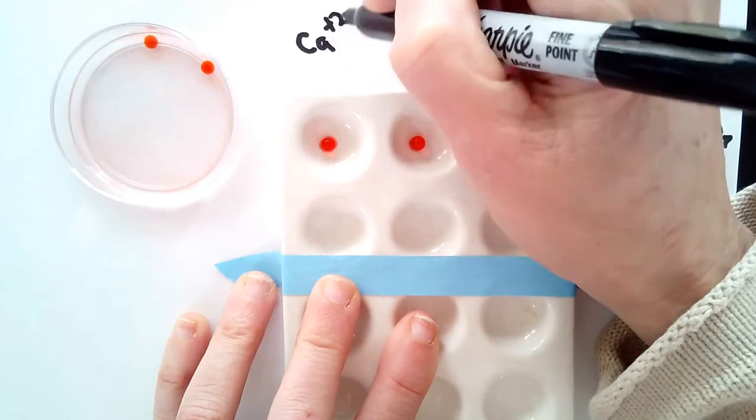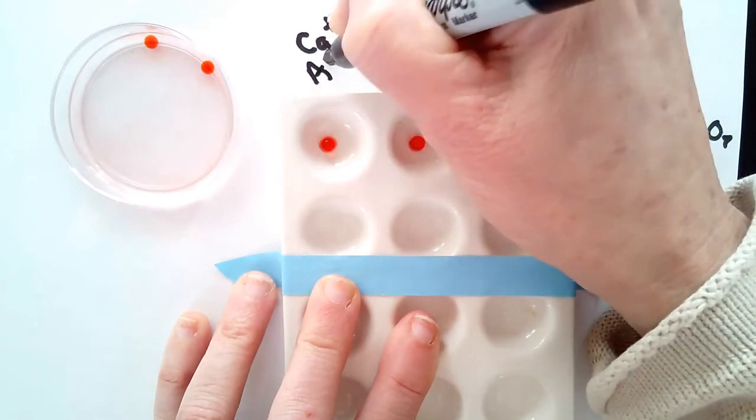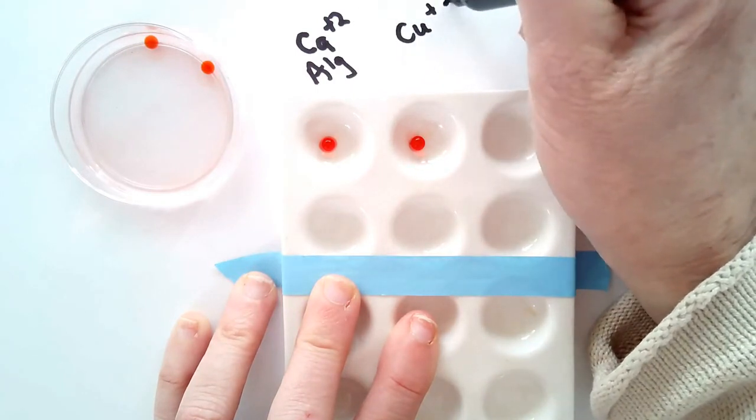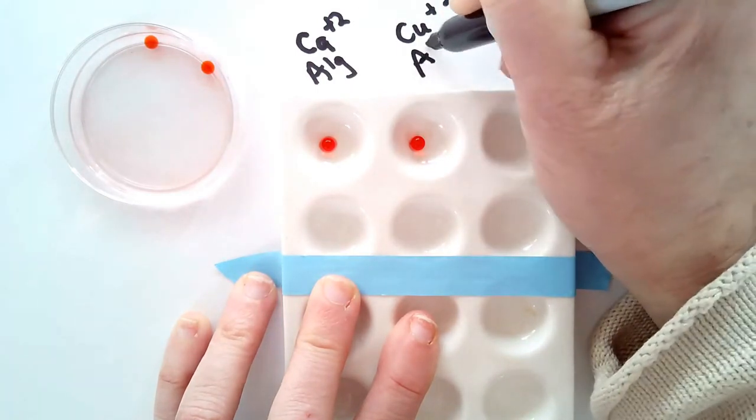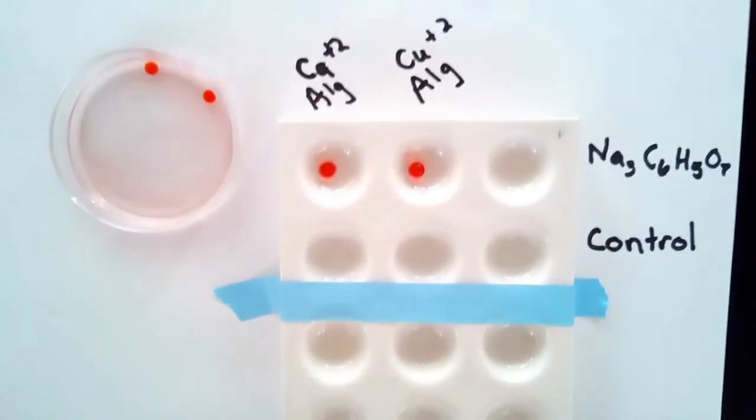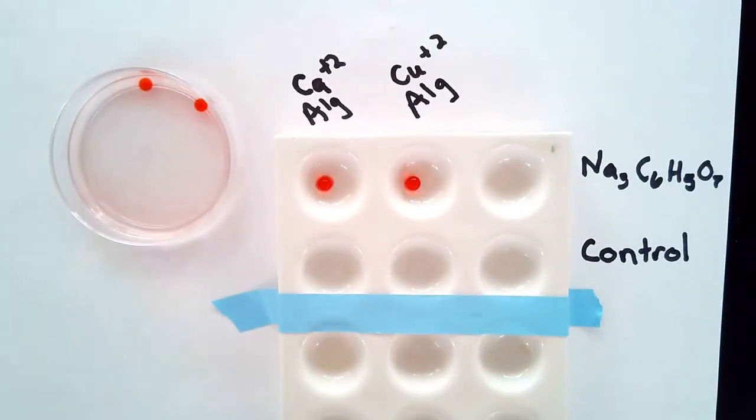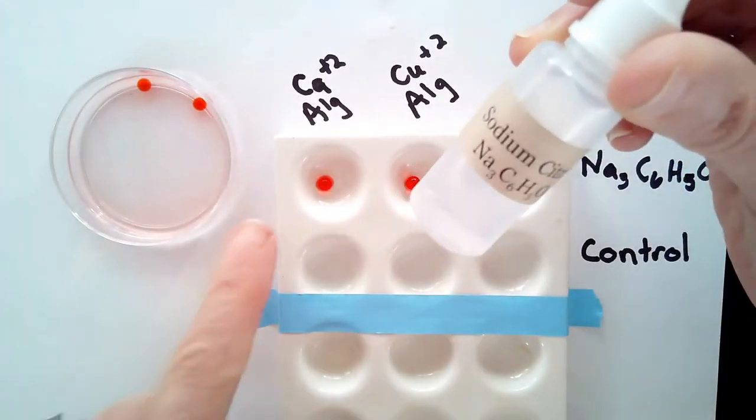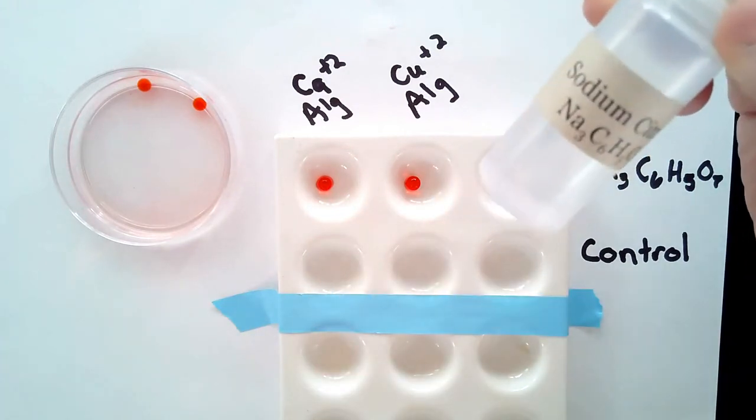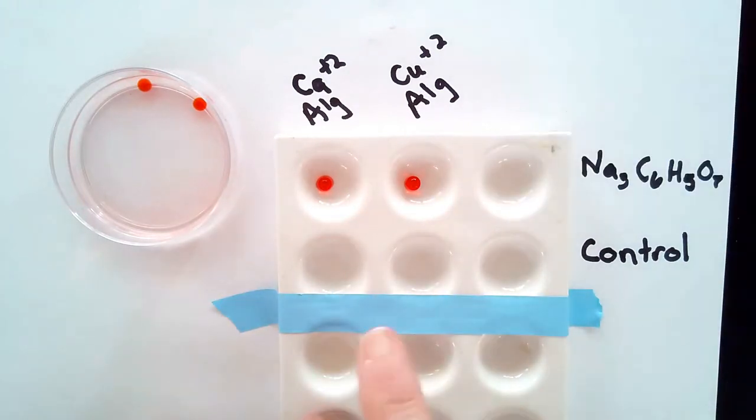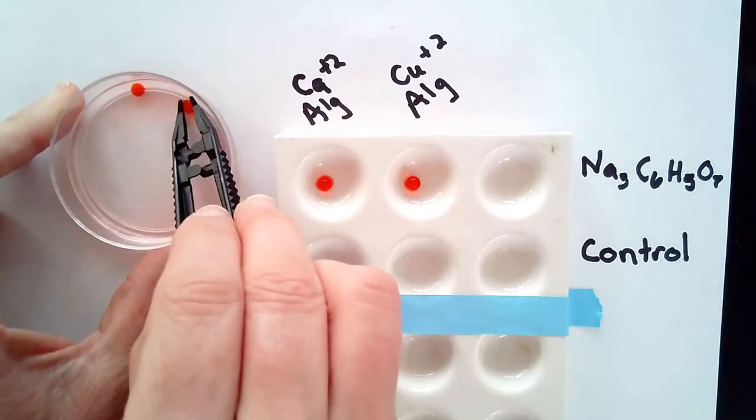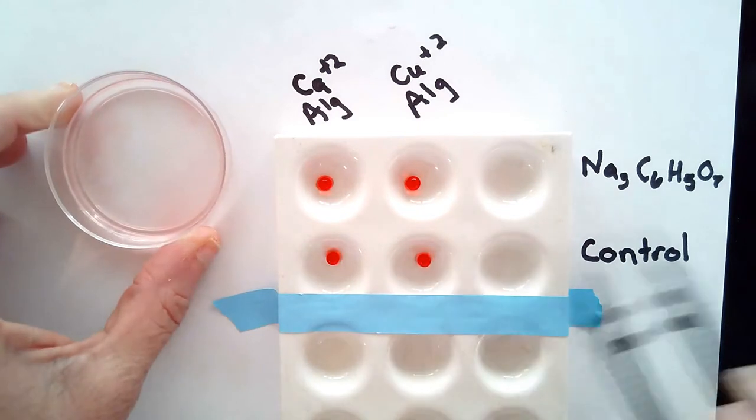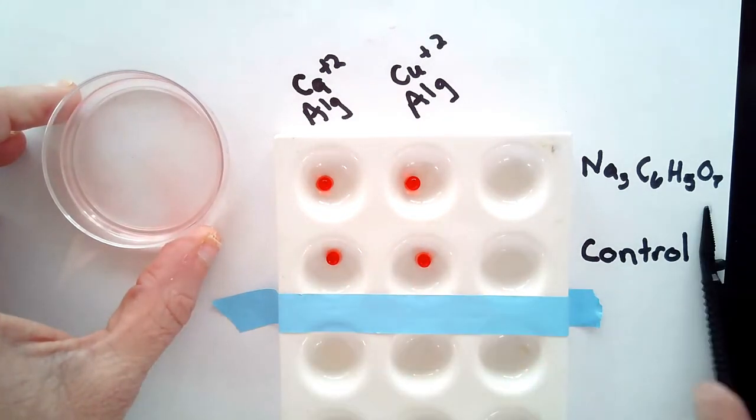Ca+2 and I'm just going to abbreviate alginate Alg, or if you did copper, because that will make a difference. Once this is labeled accurately, then you can go ahead and transfer eight drops of the sodium citrate solution into each of the wells and observe what happens. Again, you will add the control beads to the wells and you will transfer your control substance, eight drops, into those as well.